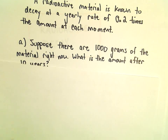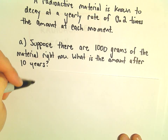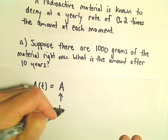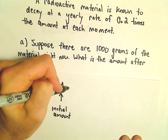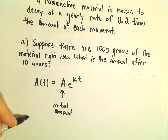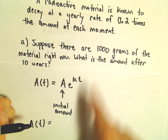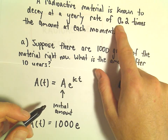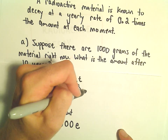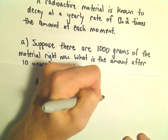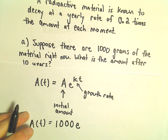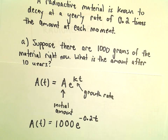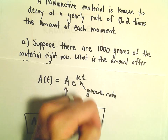When things change at a rate proportional to the amount, that tells us the amount at some time t equals A — the initial amount — times e to the kt. In part A, the initial amount is 1,000, and it's decaying at a rate of 0.2. k represents the decay rate, sometimes also called a growth rate. Since it's decaying, we'll use negative 0.2 times t, and that describes the amount at any time t.